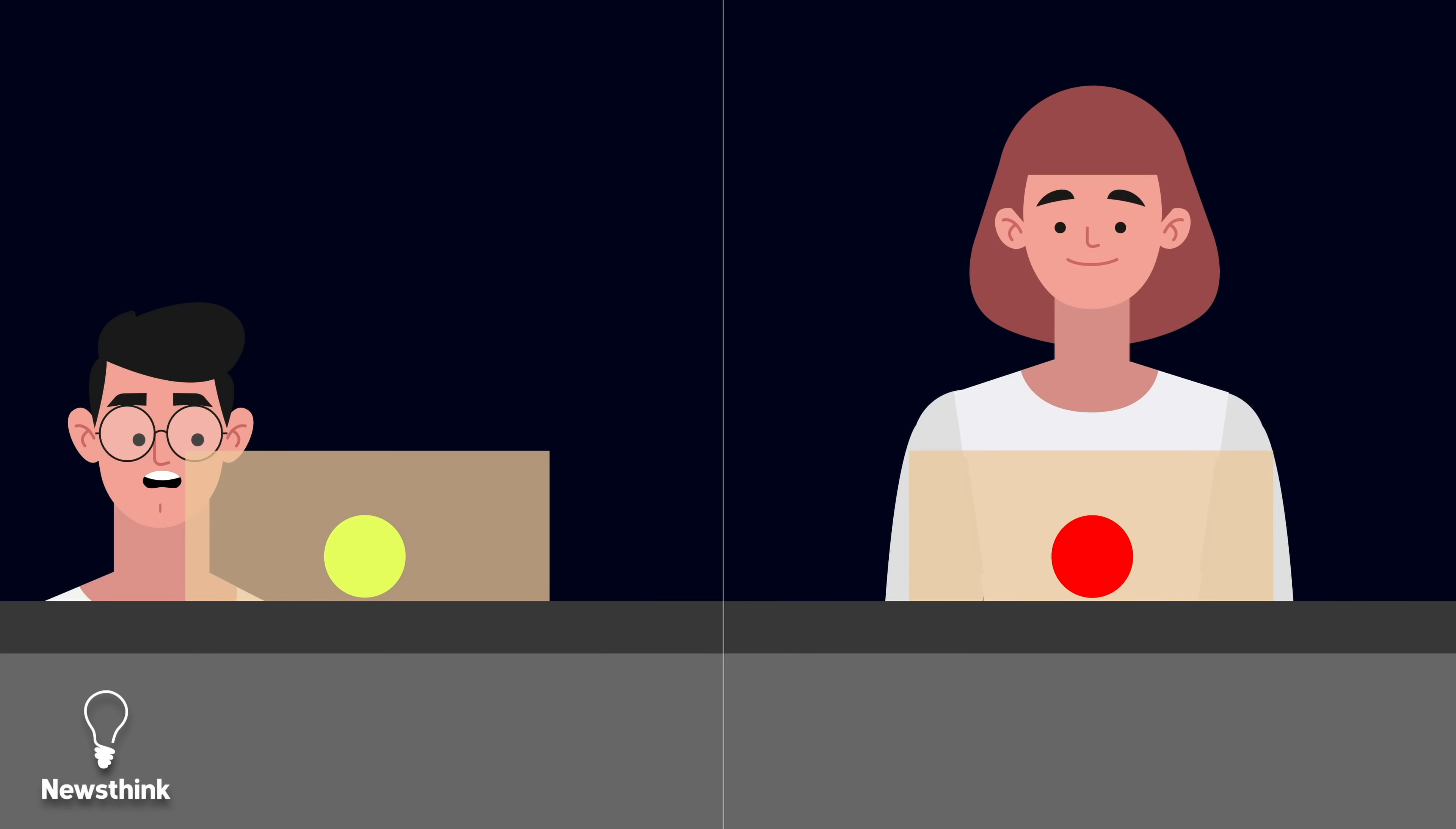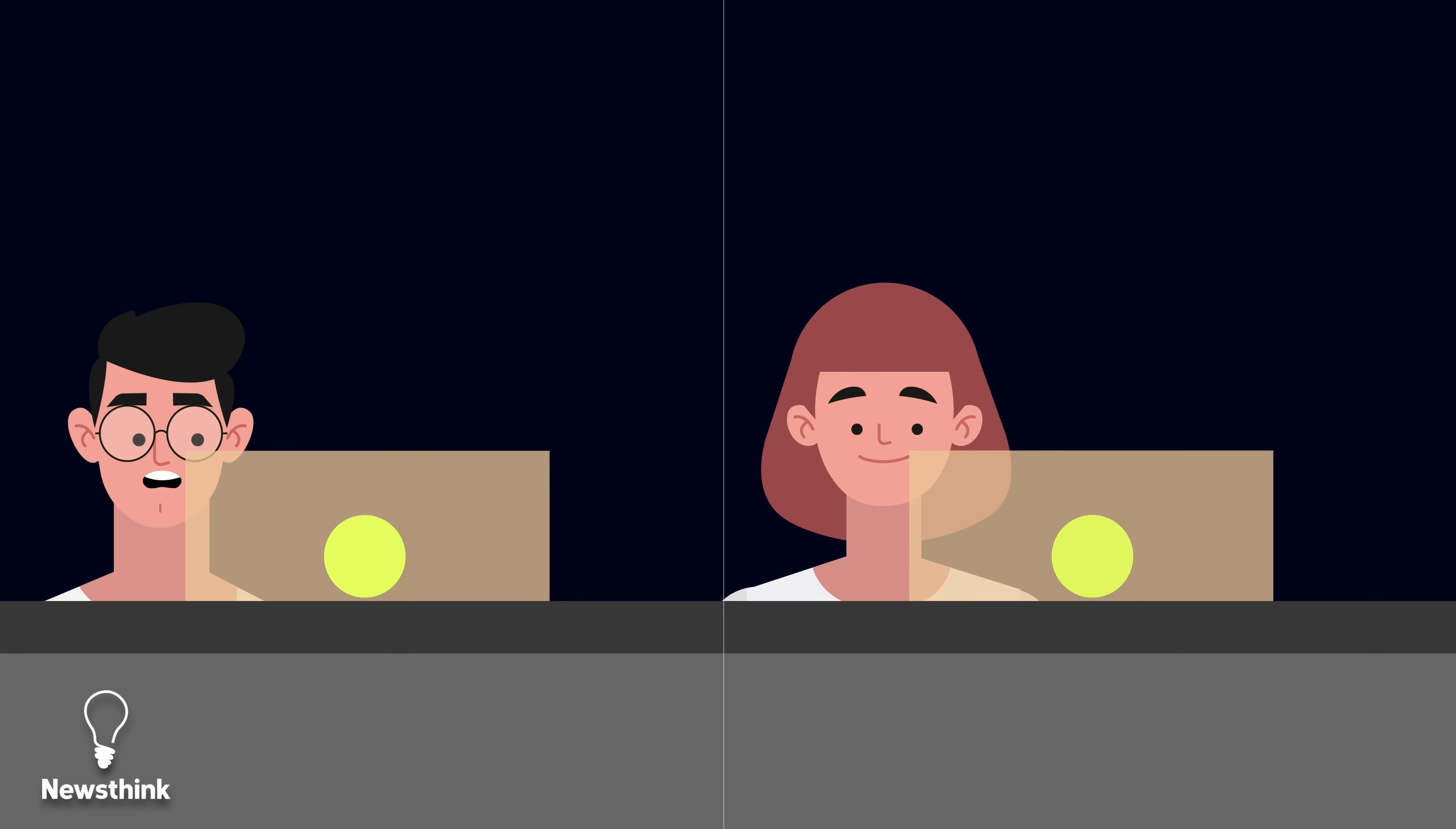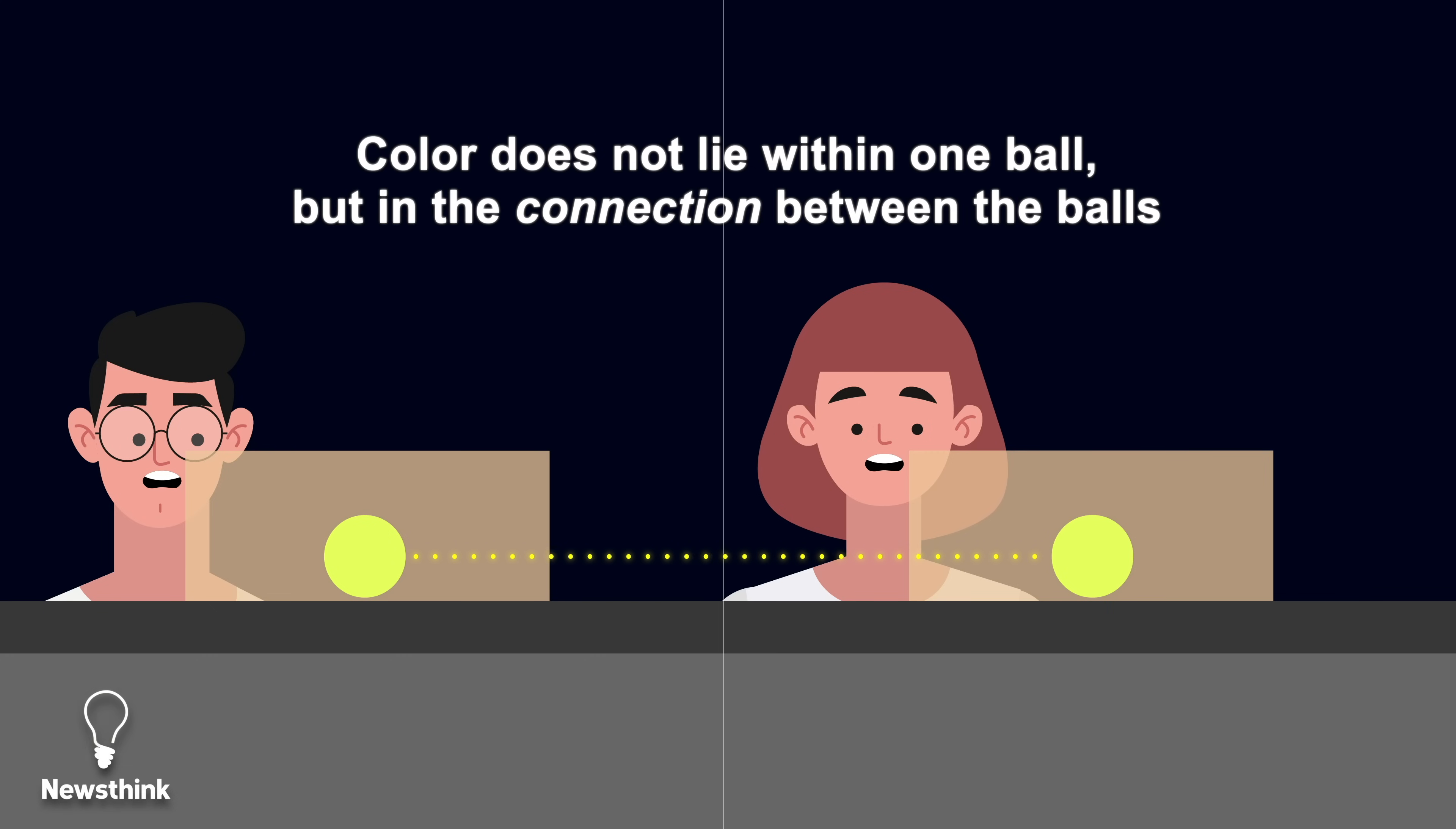If Sarah now switches to the side view as well, the color of her ball matches what Mark saw. The choice of the viewing angle changed the outcome of the experiment. So the information about color does not lie within one ball, but rather in the connection between the balls.